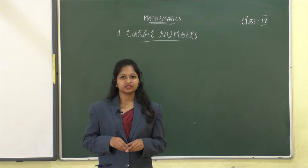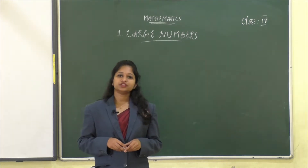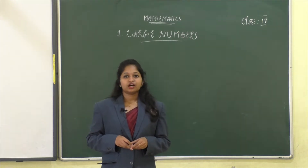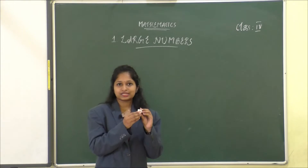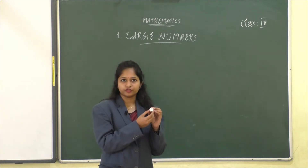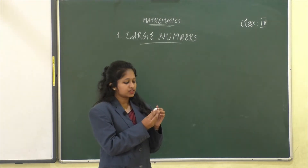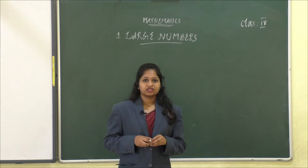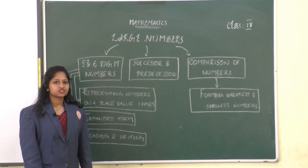Hello everyone, I'm Elizabeth, your mathematics teacher. Mathematics is all about numbers, right? You learned about numbers in your smaller classes. Now we'll be learning some more about numbers. Our first chapter is large numbers. Can you see what is in my hand? This is a dice. On each of the sides there are a particular number of dots — one dot, two, three, and so on, up to six dots. In this chapter you will be learning up to six digit numbers.